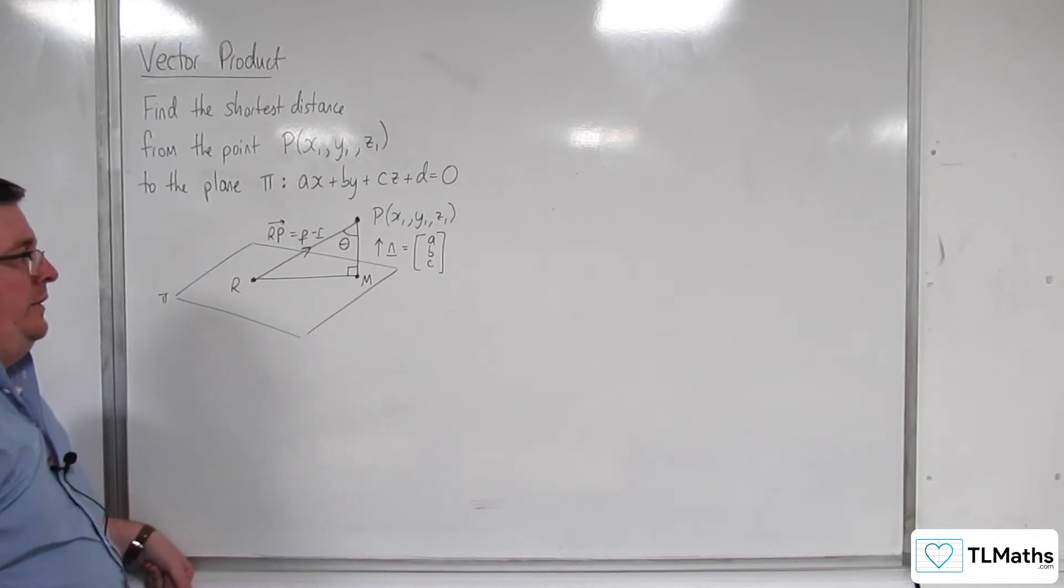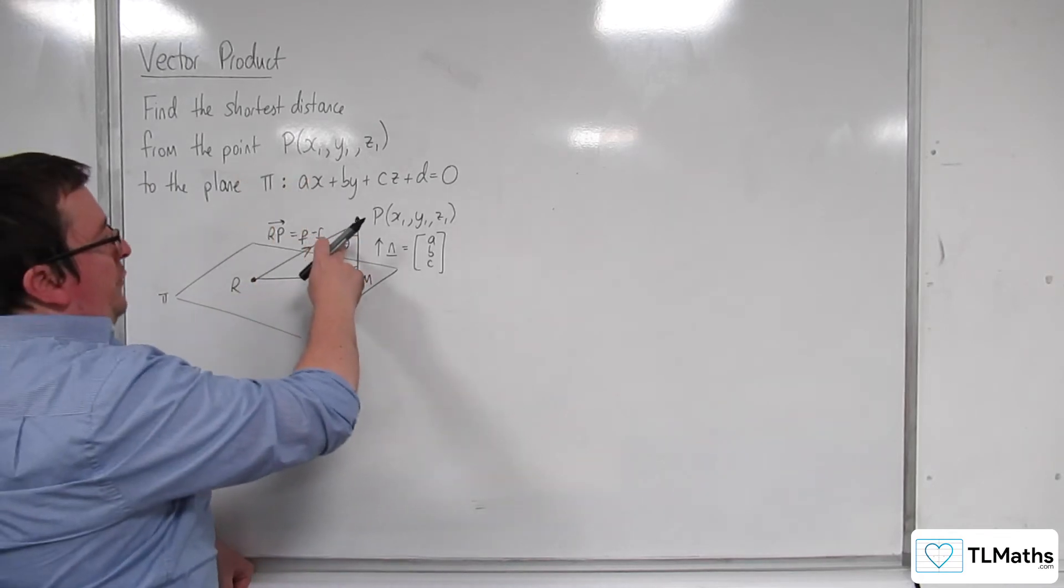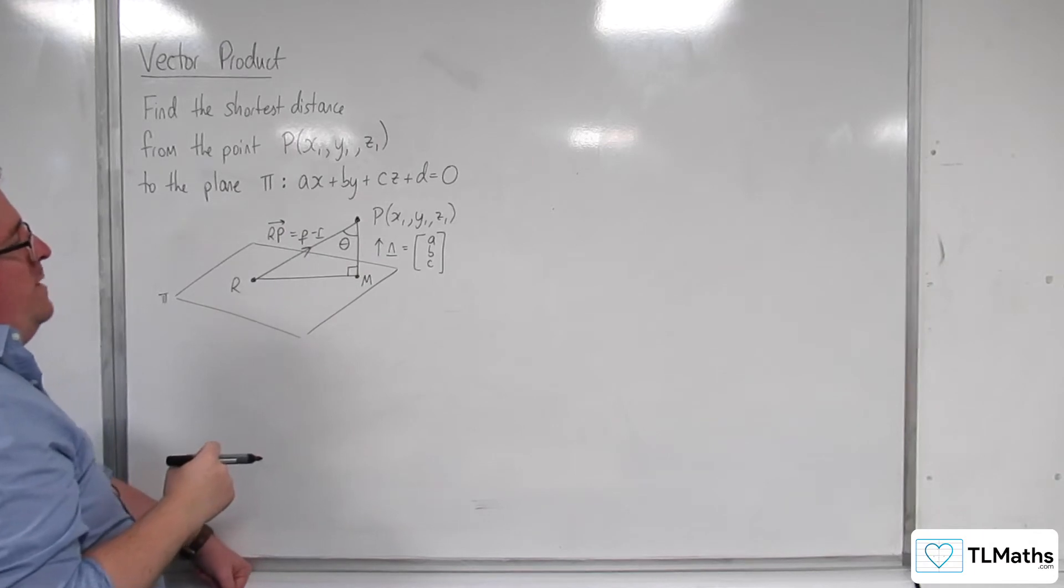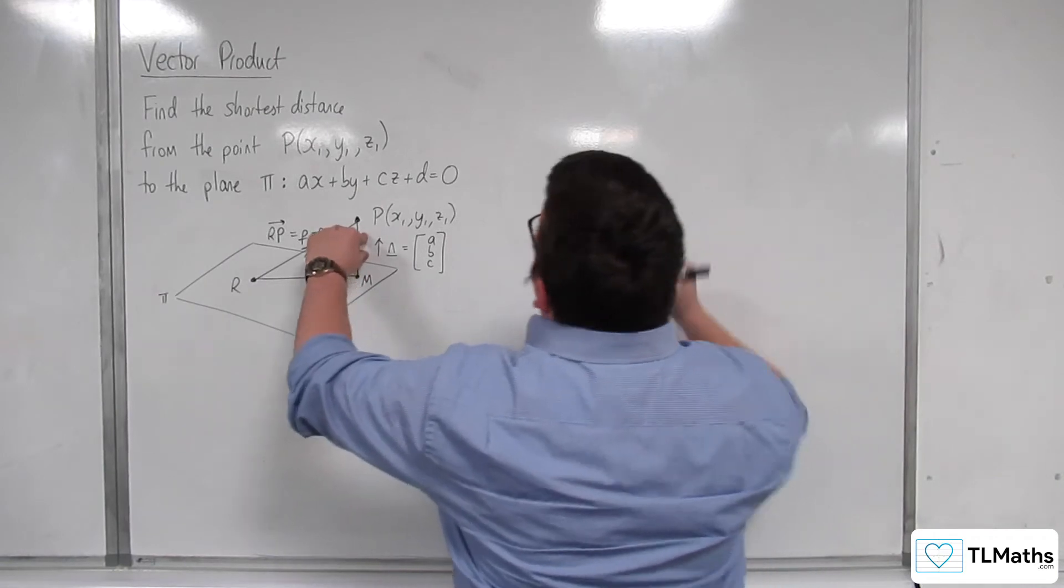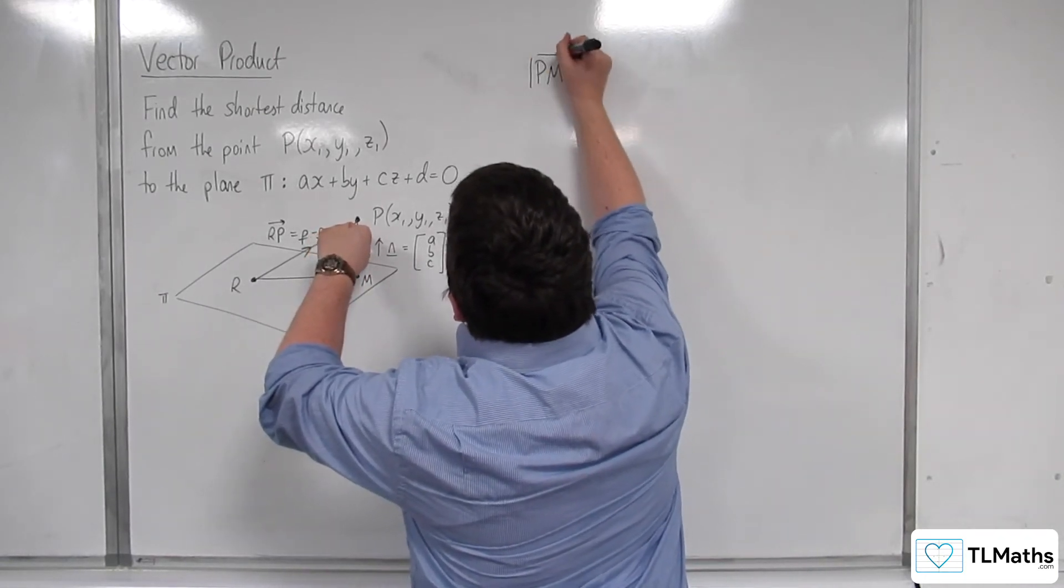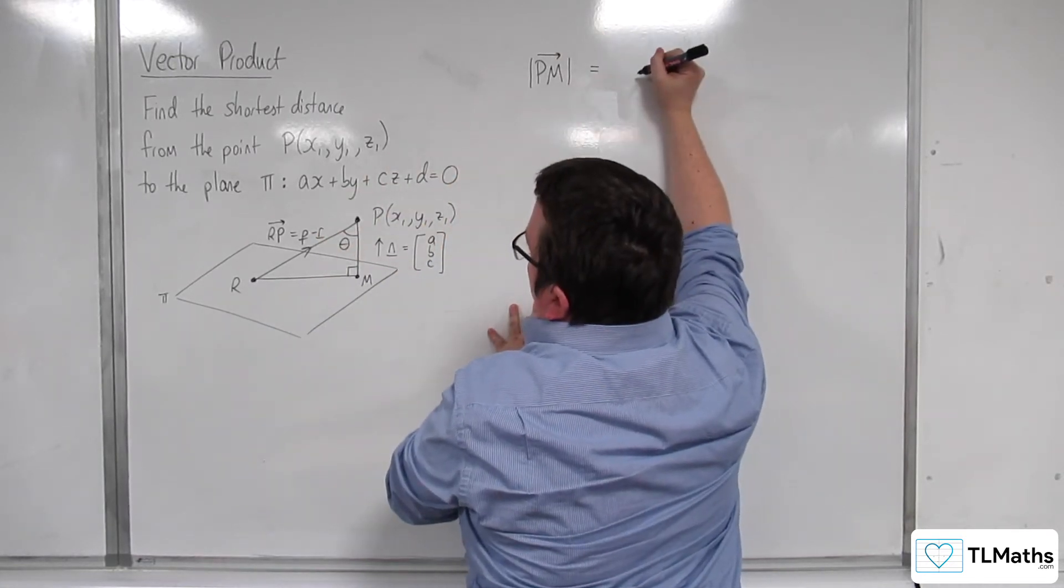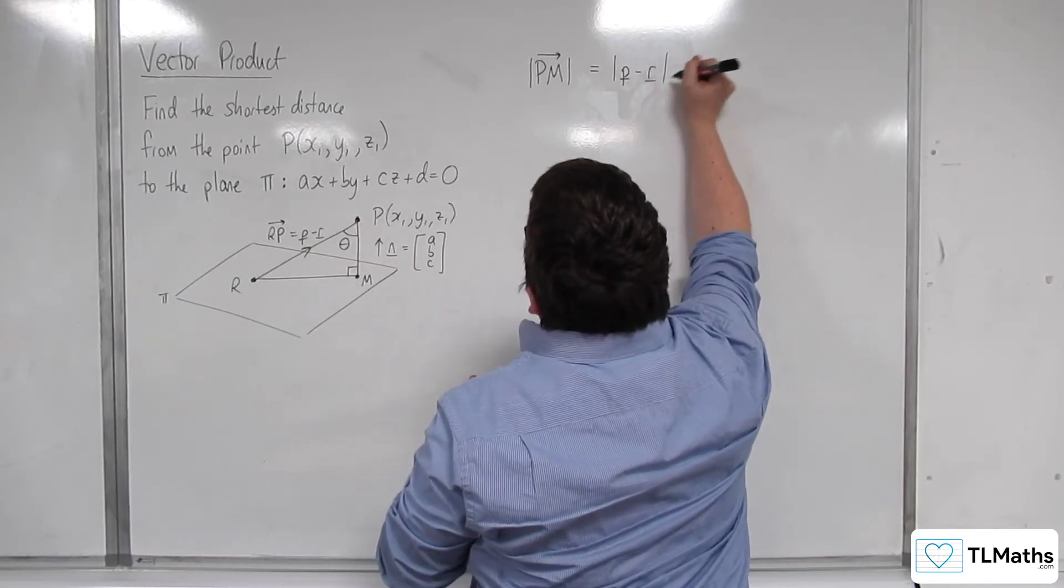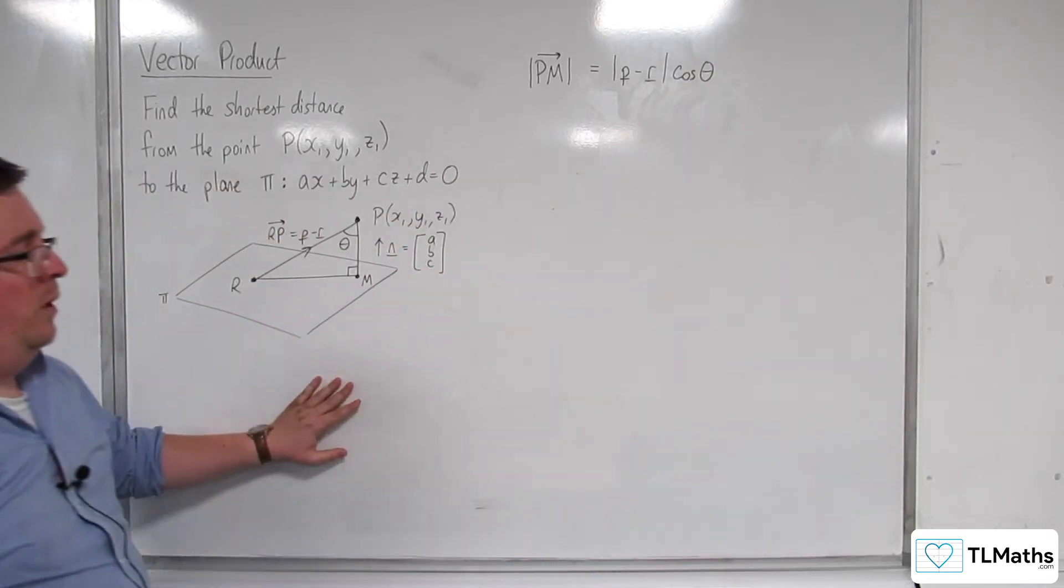So what we can say is that using SOHCAHTOA, that cosine of the angle will be the adjacent divided by the hypotenuse. So that means that the adjacent side, what I want to find, PM, that's the target, is equal to the length of RP, which I'll write as P minus R, times by cosine of the angle. So this is what we're introducing.